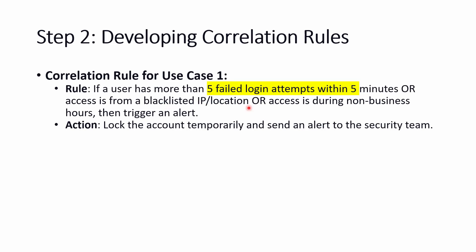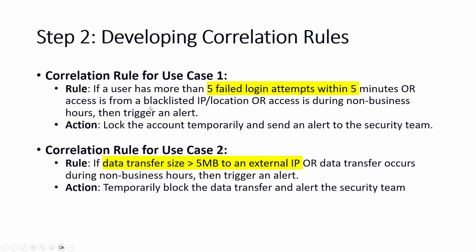For Use Case 1 — unauthorized access detection — the correlation rule is: if a user has more than five failed login attempts within five minutes, or access is from a blacklisted IP, or access occurs during non-business hours, then trigger an alert. Based on this rule, if it matches, the action is to lock the account or send an alert to the security team — or generate a log. You can define the action as needed.